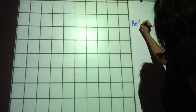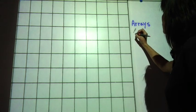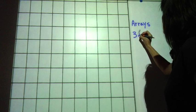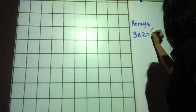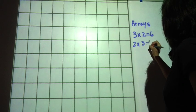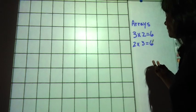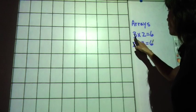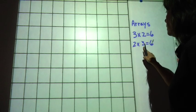Arrays are used to show the commutative property of multiplication as well. 3 times 2 equals 6 and 2 times 3 equals 6. We can represent these in very different ways: 3 groups of 2 and 2 groups of 3.